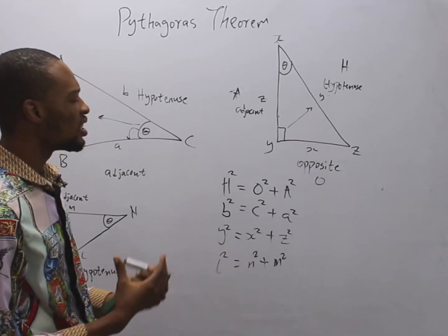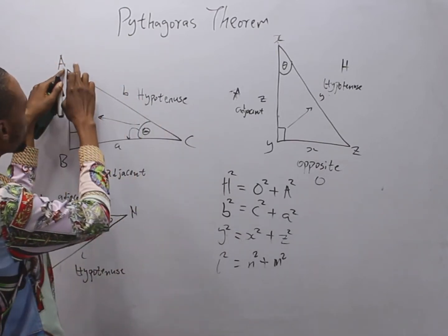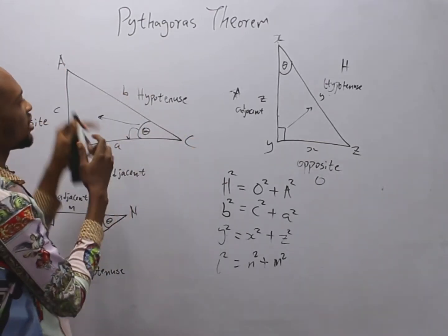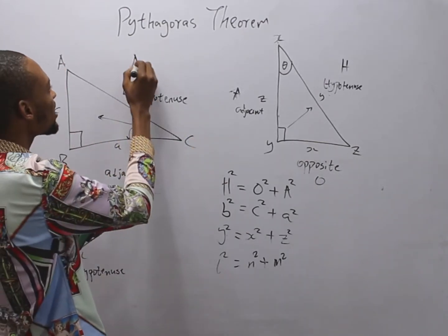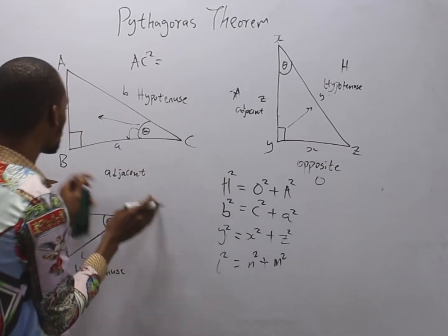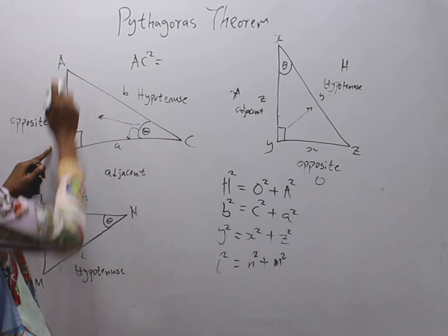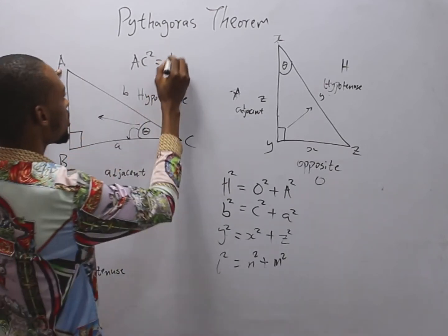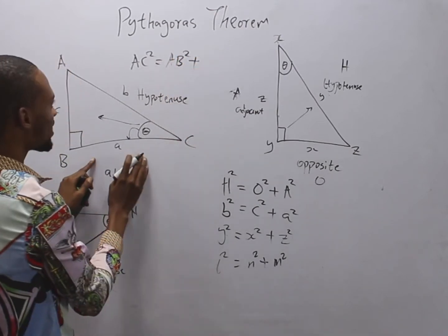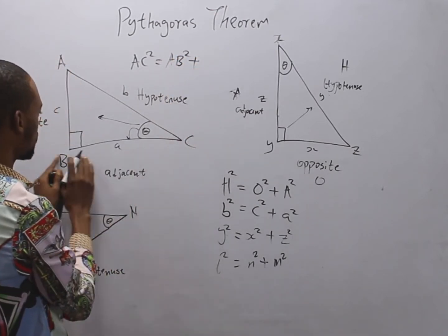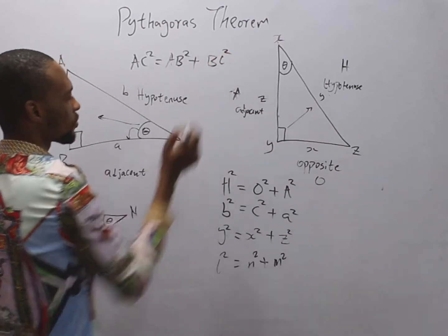It also means that since the hypotenuse runs from A to C, the length AC² equals the opposite AB² plus the adjacent BC². That is what Pythagoras' theorem is about.